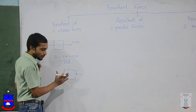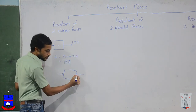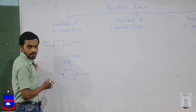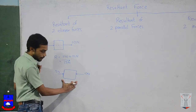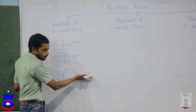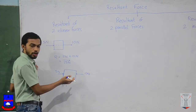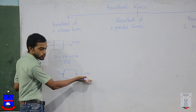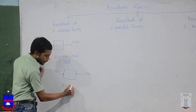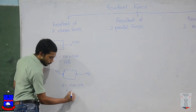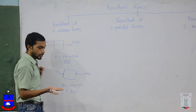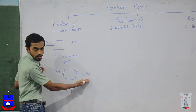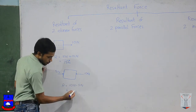Now let's say you have the same object, but the direction of the 10 newtons force is reversed. So this will be 10 newtons towards the left and 5 newtons towards the right. The resultant force will act in the direction of the larger force. You should subtract the smaller force from the larger force — that is, 10 minus 5 — which gives you 5 newtons. Since the resultant force is also a vector quantity, we mark its direction as the direction of the larger force, which is from right to left.